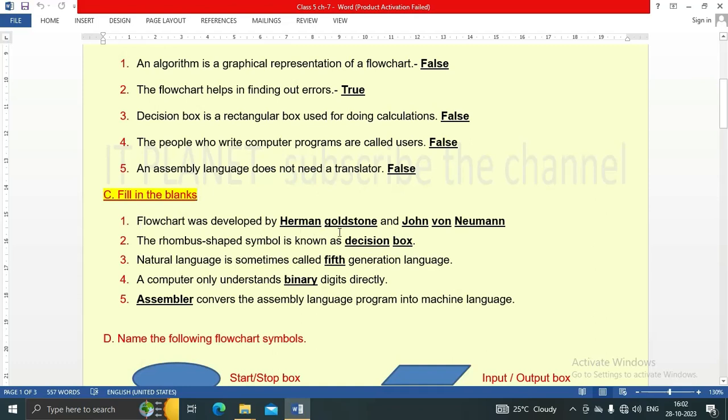First question: flowchart was developed by Herman Goldstone and John von Neumann. The rhombus shape symbol is known as decision box. Number three: natural language is sometimes called fifth generation language. Number four: a computer only understands binary digits directly. Number five: assembler converts the assembly language program into machine language.